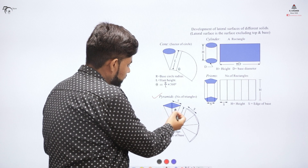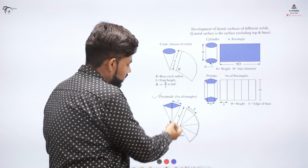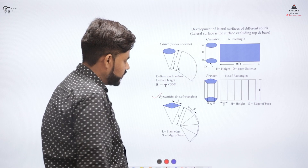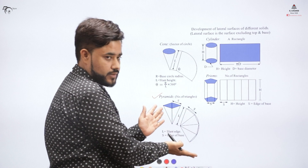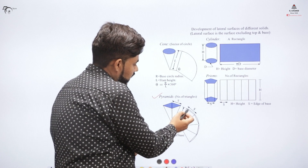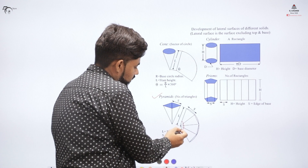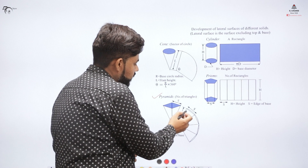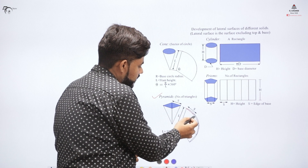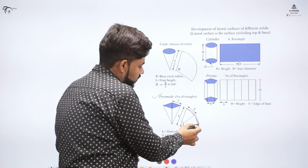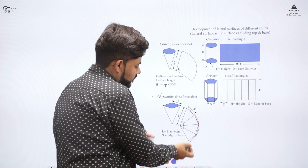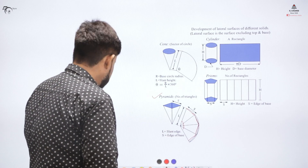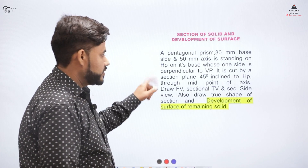For a pyramid — say a rectangular pyramid — I take the slant edge and open it out. The angle is similar to the cone case, but here there is no need to find the angle. Instead, I divide the development into four sections to get the open region of the pyramid.